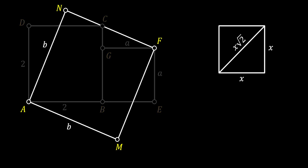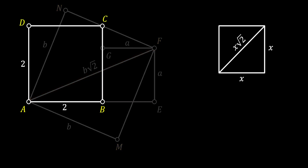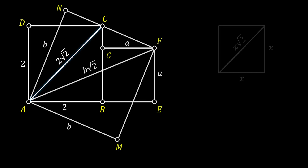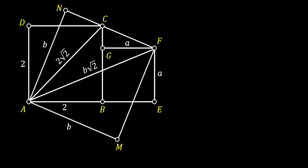First, we will draw the diagonal A, F of our tilted square. Since the side of this square is equal to B, the diagonal must have the length of B times square root of 2. Next, let's look at the angle N, A, C and label it as theta. We know that the angle N, A, F must be equal to 45 degrees since A, F is the diagonal of our tilted square. This means the remaining angle C, A, F must equal 45 degrees minus theta.